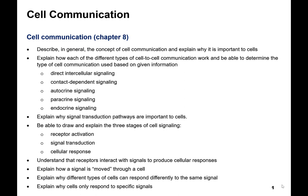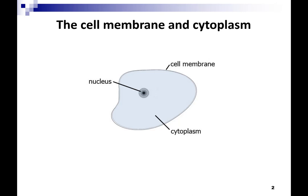This lecture is about cell communication. The big picture is that cells have to interact with their environment through chemical signals and proteins. We've talked a lot about cell membranes and transmembrane proteins. We have proteins that cross the membrane, and mostly we've been talking about transport — moving things in and out of the cell. Now we're going to talk about a different type of protein called a receptor.